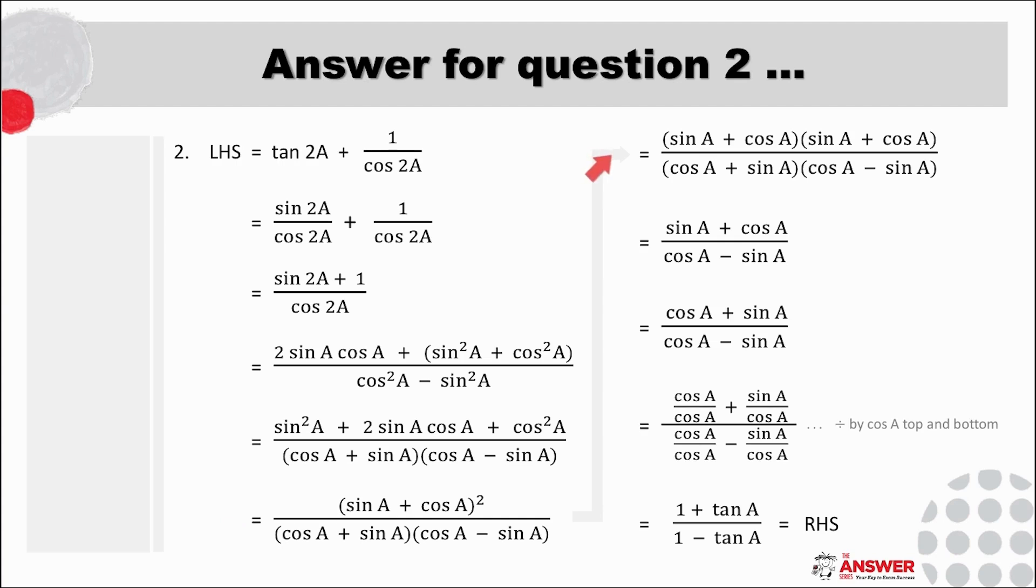We then rely on our algebra to get us all the way through factorizing and simplifying the whole time keeping our eye on the right hand side to see if we're on the right track heading towards where the question requires us to go. In this case the right hand side is in terms of tan and because our expression is in terms of sin and cos we will need to think of how to use the tan identity to get us back to tan.